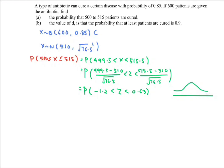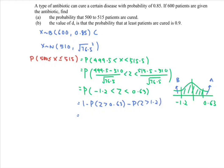Refer to the diagram and locate the z. So we have 1 minus the probability that z is greater than 0.63, minus the probability that z is greater than 1.2. Referring to the table, for z=0.63 we have 1 minus 0.2643, and for z=1.2 we have 0.1151. After simplifying using the calculator, the probability that x is greater than or equal to 500 and less than or equal to 515 is 0.6206.